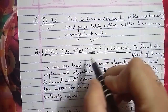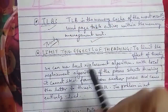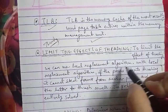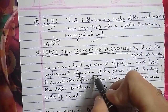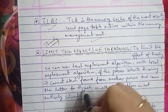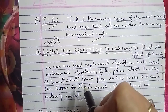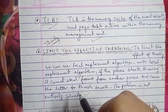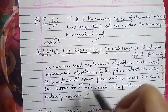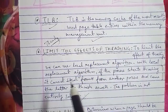To limit the effect of thrashing, we can use a local replacement algorithm. With the local replacement algorithm, if a process starts thrashing, it cannot steal frames from another process and cause that process to thrash as well. However, the problem is not entirely solved.